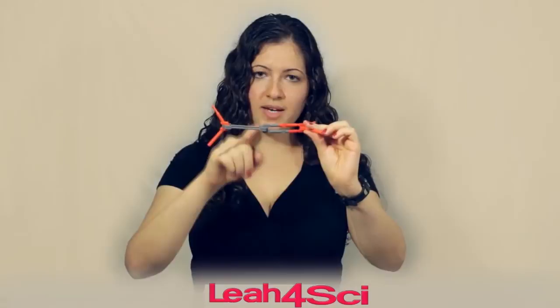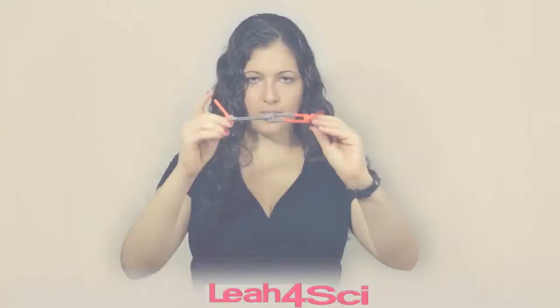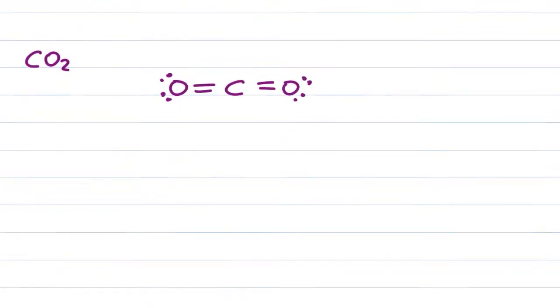Just like ethine, the carbon is sp which means it's linear and 180 degrees. Now let's see what it looks like on paper. If we have the molecule CO2 and we draw it out, we have a central carbon atom double bound to two oxygen atoms as far away from each other. So once again we have that linear geometry and 180 degree bond angle.